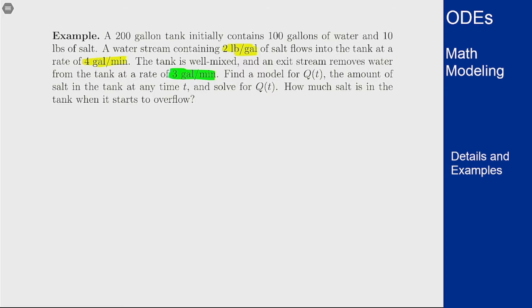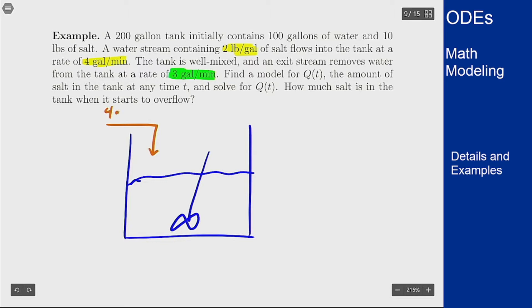We'll start by drawing a picture as we always do. Here's our well-mixed tank. We have an inflow stream that's 4 gallons per minute and has a salt concentration of 2 pounds per gallon, and we have an outflow stream at a rate of 3 gallons per minute.